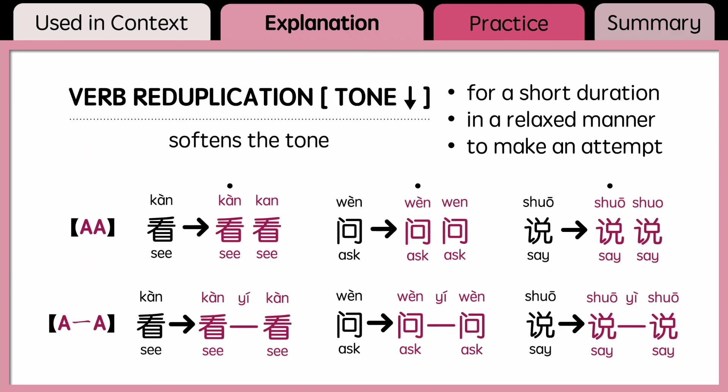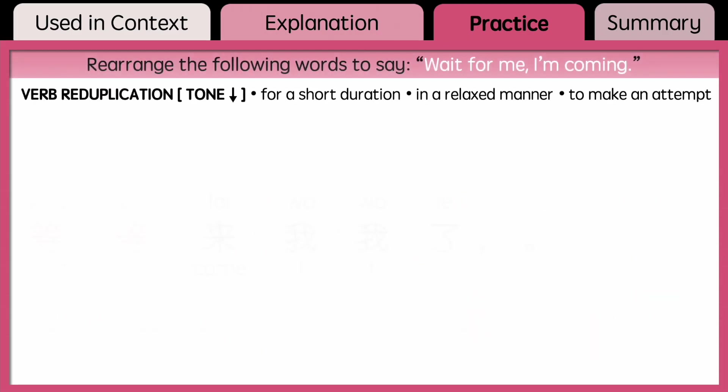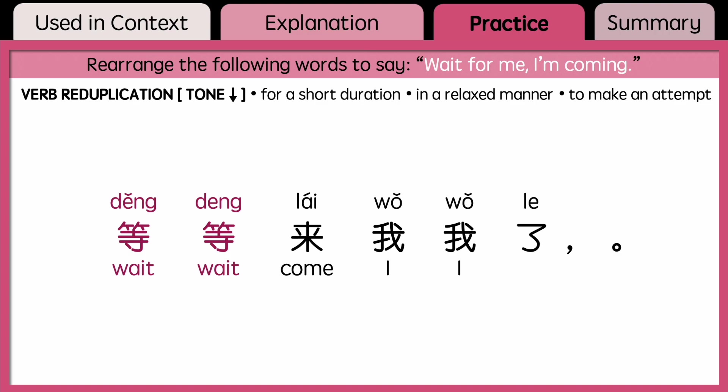Remember, I've only covered some general rules in this video. It does not encompass all the intricacies of verb reduplication. But as you expose yourself to more examples, you will eventually get better at it. Now let's do some practice. Rearrange the following words to say 'Wait for me, I'm coming.' You can pause the video and think about it first.